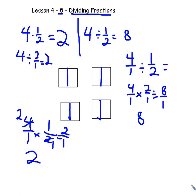So in a nutshell: 4 divided by 1/2 is the same as 4 times 2/1. Inverse operation: 4 times 1/2 is the same as 4 divided by 2/1. They're both 2.